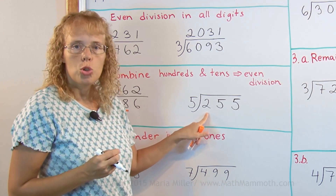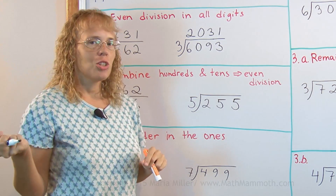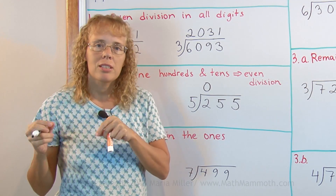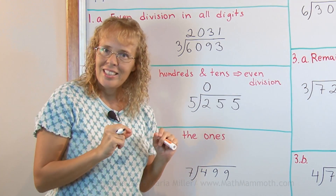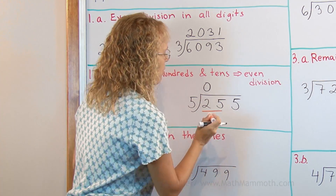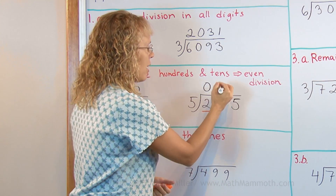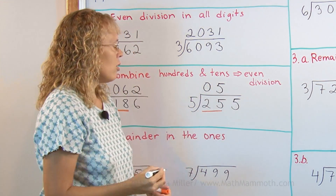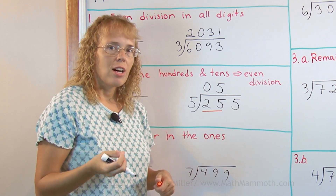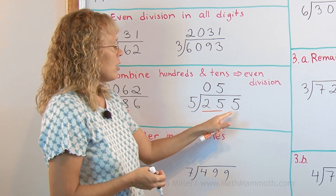Similarly, if you have 200 dollar bills and 5 people sharing them, you can't divide evenly, so you put 0 there. You exchange those 100 dollar bills for 10 dollar bills — you already have 5 ten dollar bills, and now you have a total of 25 tens. Then 5 goes into 25 five times, meaning each person gets 5 ten dollar bills.